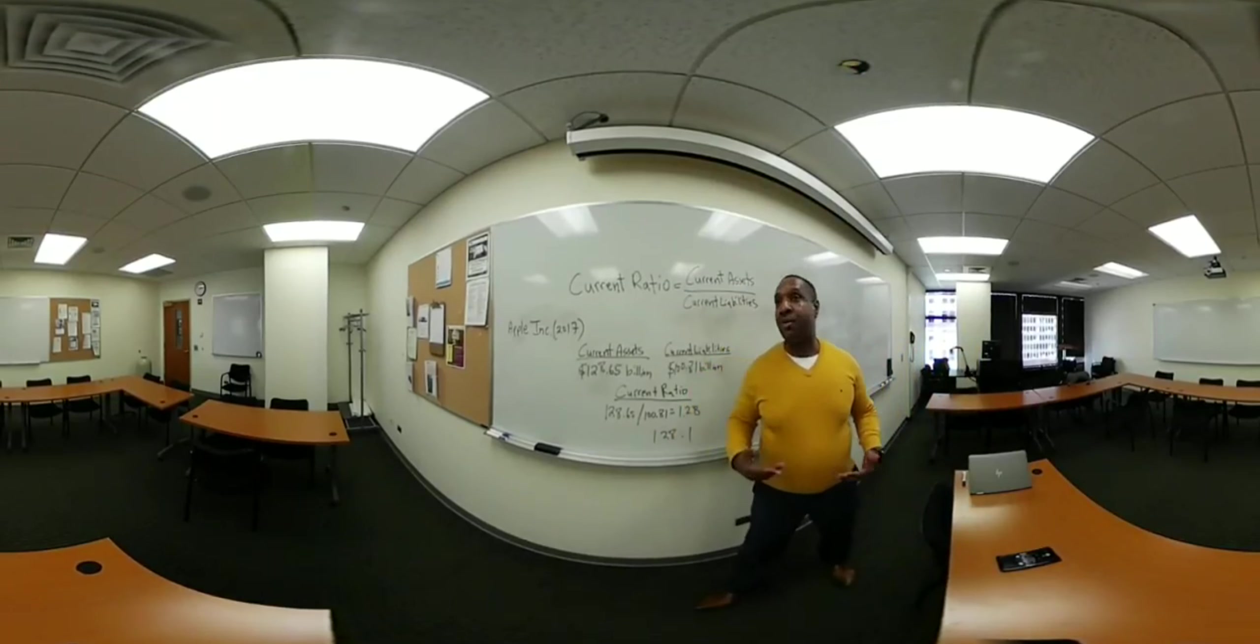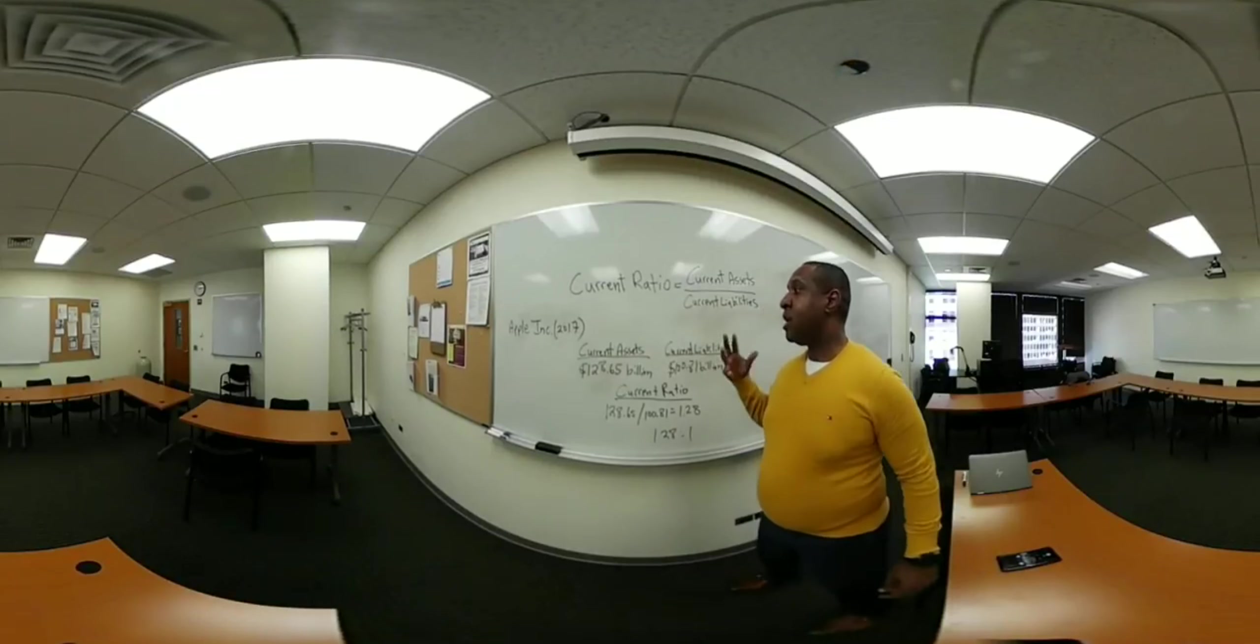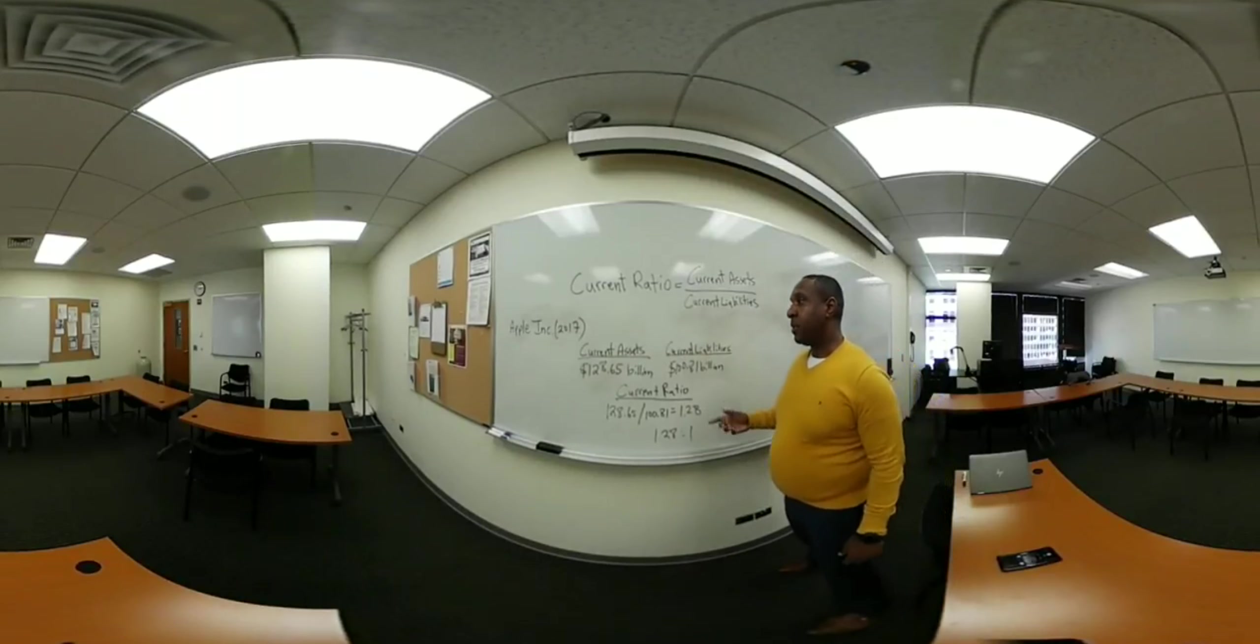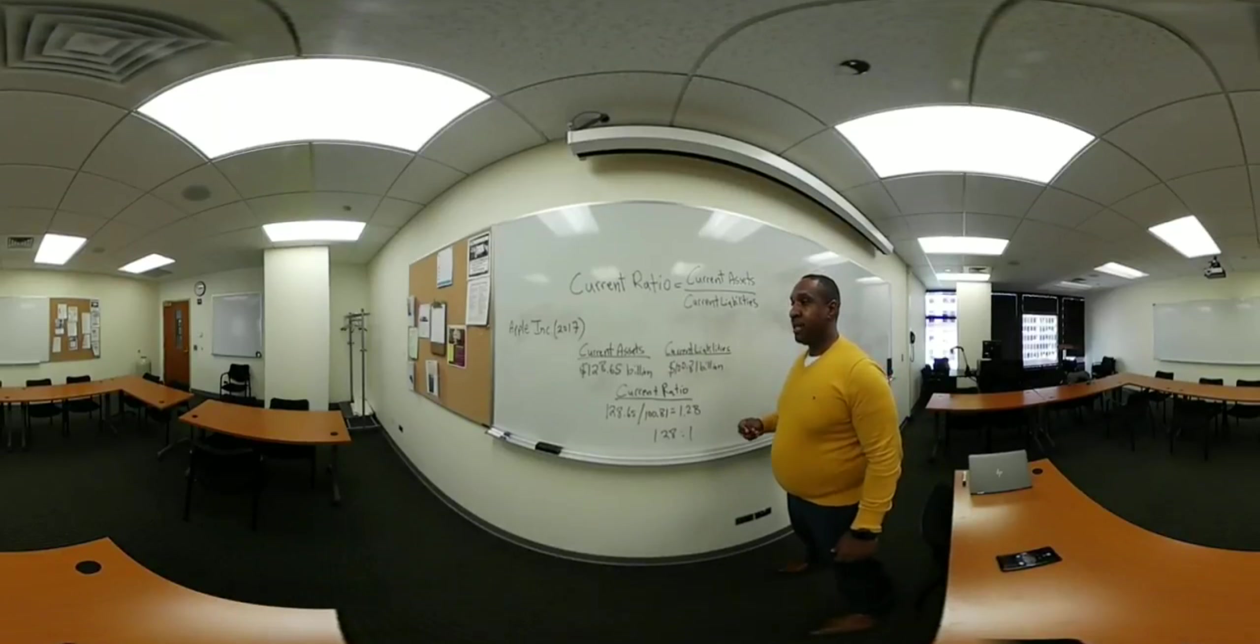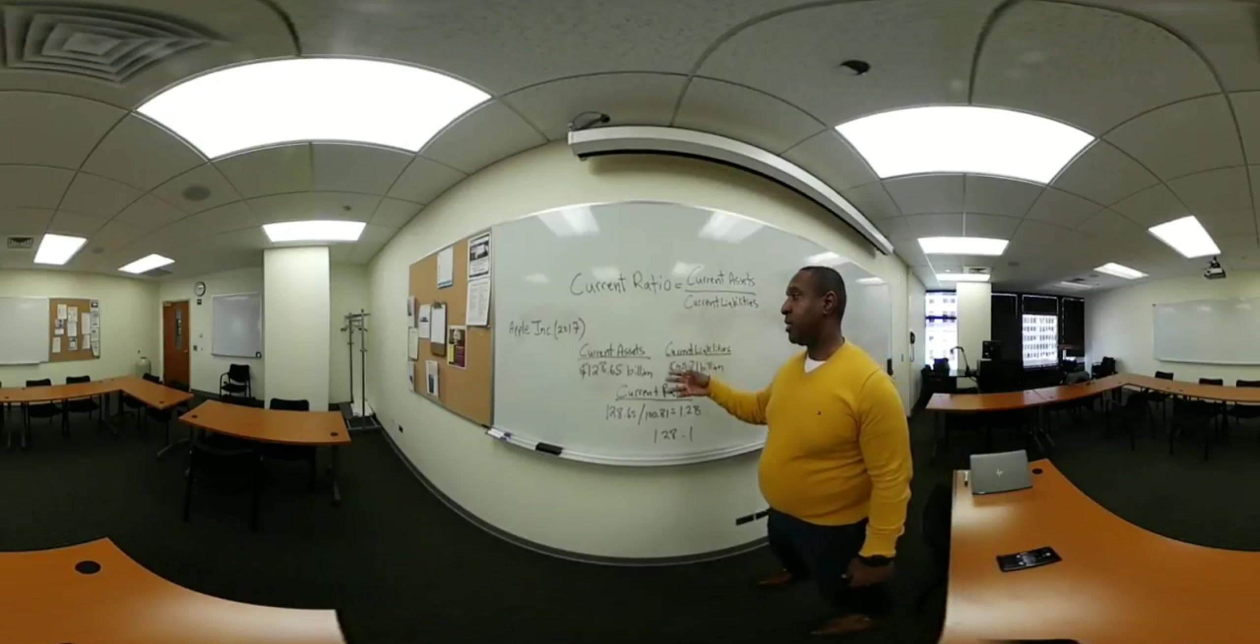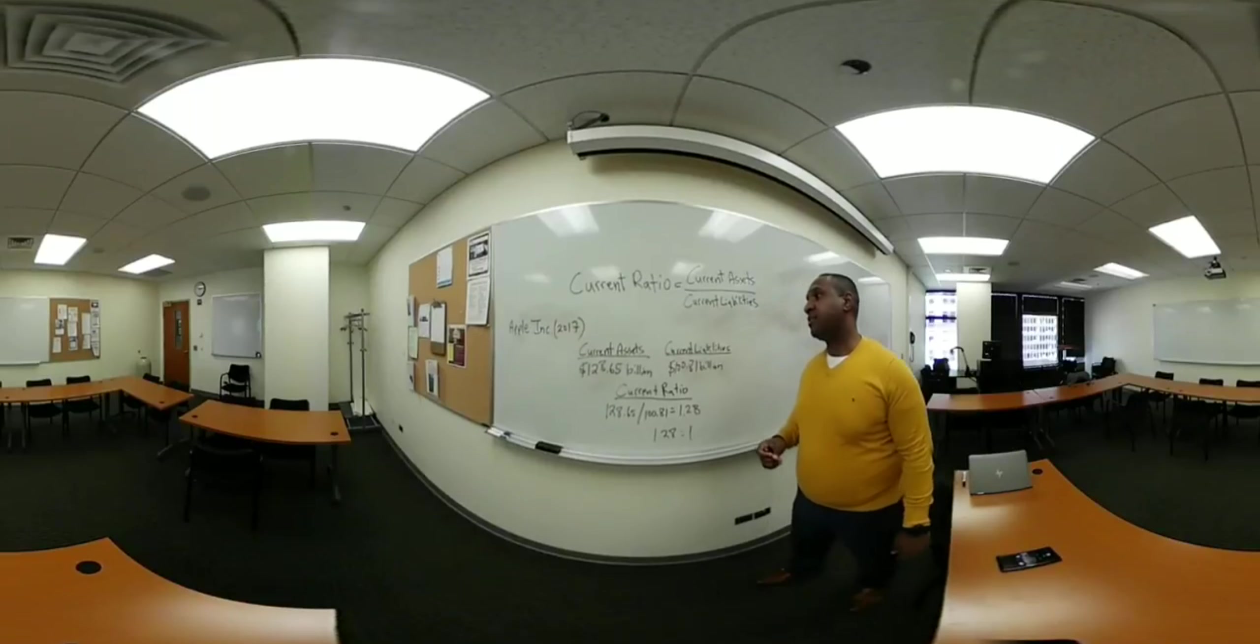To give an example of how this looks, we've taken Apple's fiscal information, year-end information for 2017, and this is found on the balance sheet. We've pulled the current assets and the current liabilities for Apple.